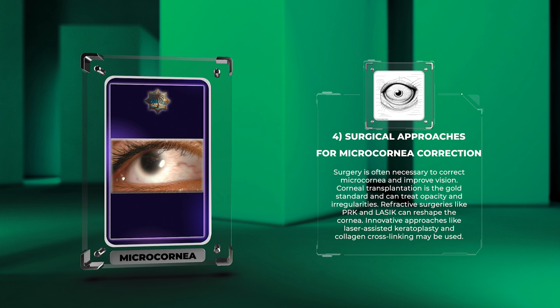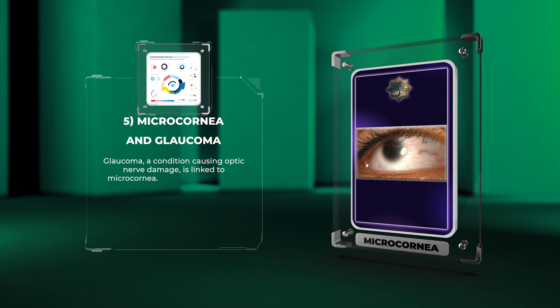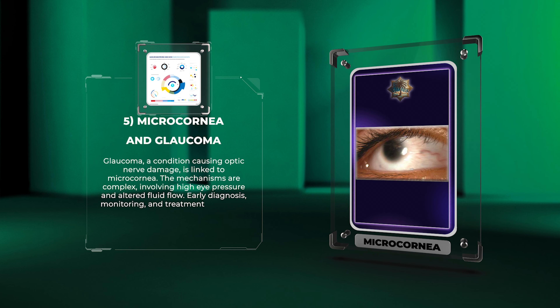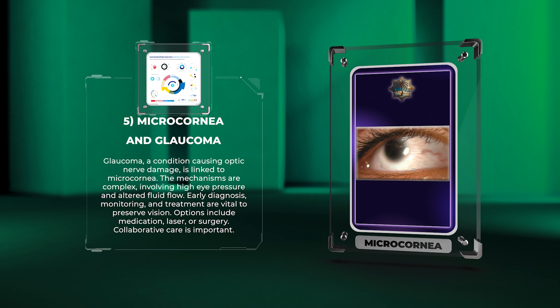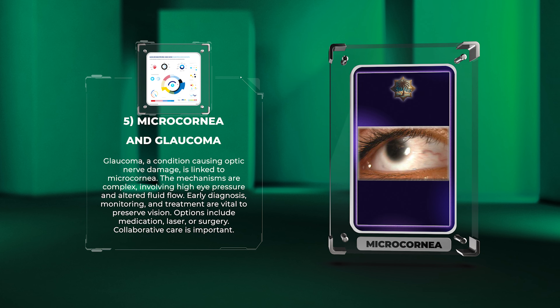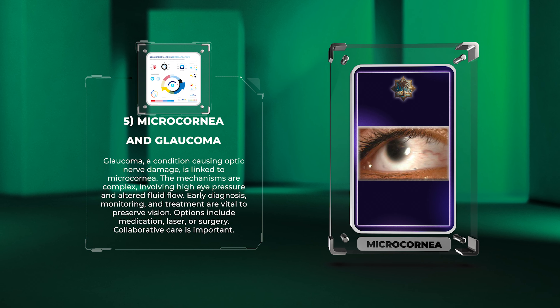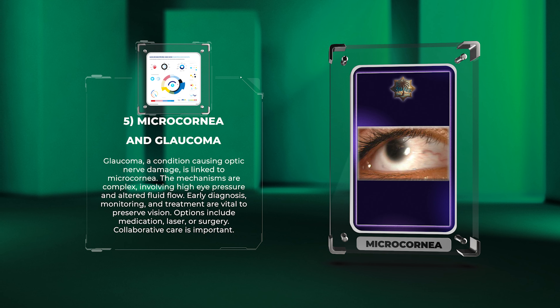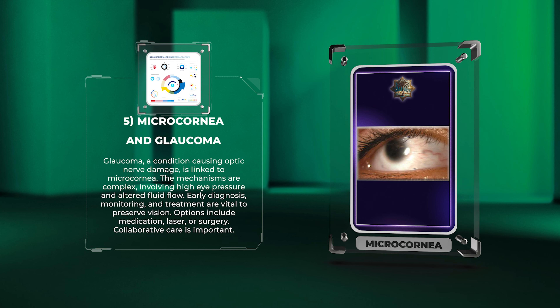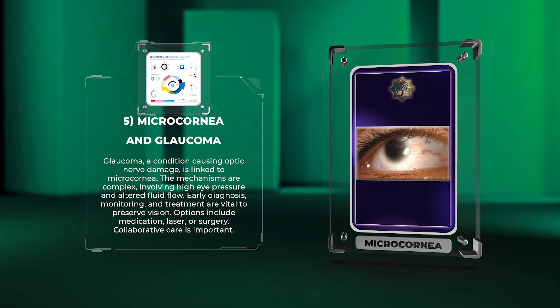Innovative approaches like laser-assisted keratoplasty and collagen crosslinking may also be used. Glaucoma, a condition causing optic nerve damage, is linked to microcornea. The mechanisms are complex, involving high eye pressure and altered fluid flow. Early diagnosis, monitoring, and treatment are vital to preserve vision. Options include medication, laser, or surgery, and collaborative care is important.